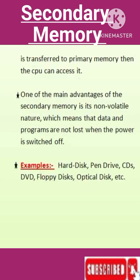The CPU cannot directly access secondary memory. First, the secondary memory data is transferred to primary memory, then the CPU can access it. One of the main advantages of secondary memory is its non-volatile nature.